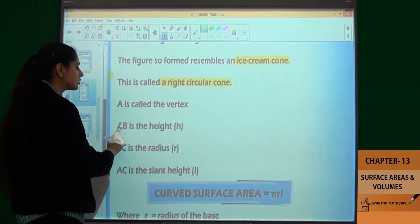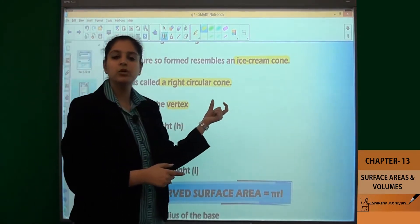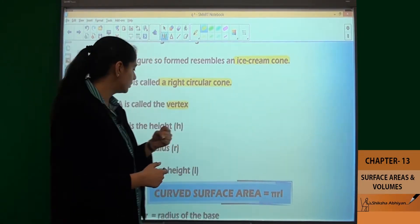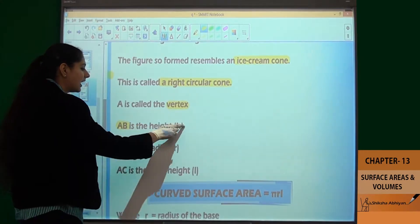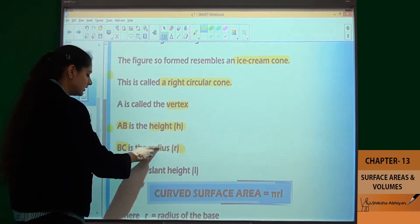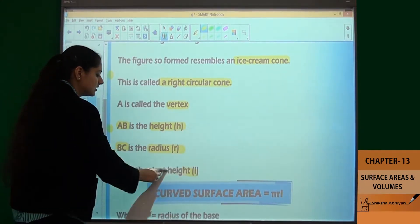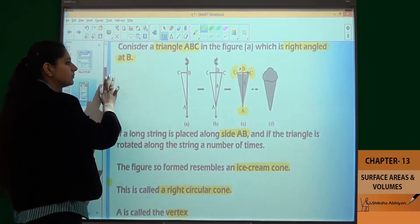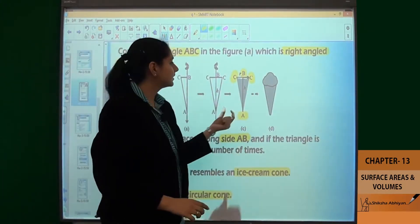Now, A is called the vertex. A is the vertex of the cone. AB is the height.